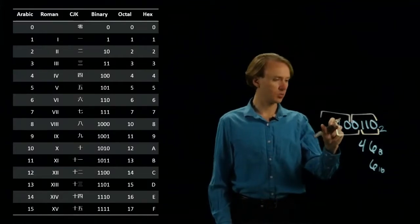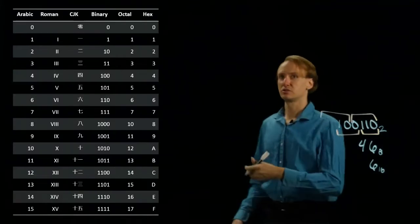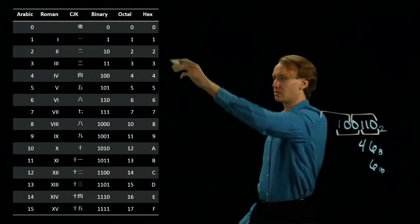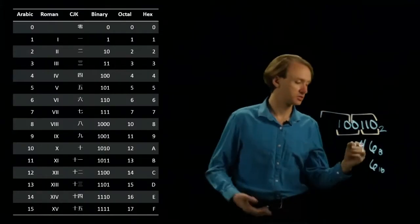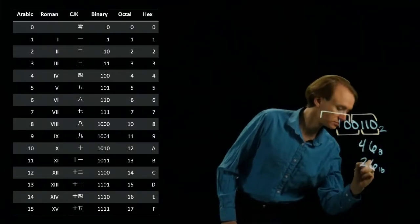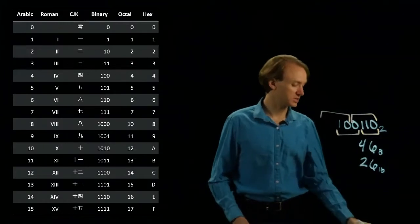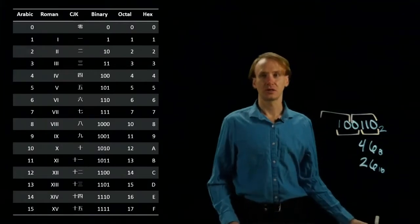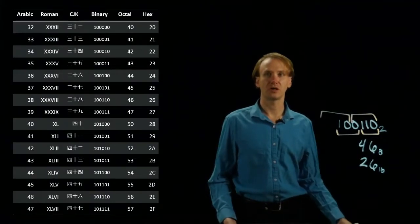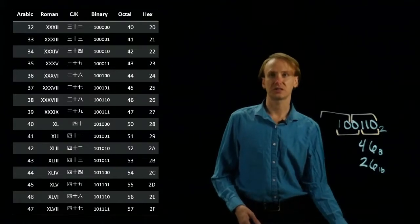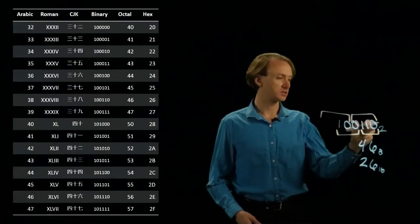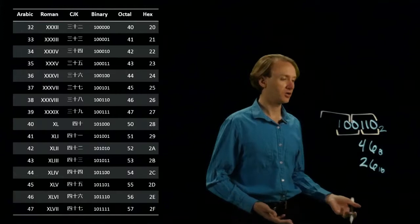Then I have 0010. So 0010 is the same as 10, which is 2. So I get 26 in hexadecimal, and again, I'll scroll down my number line. I see 26 in hexadecimal is equal to that binary number as well.